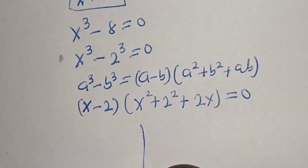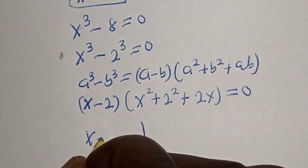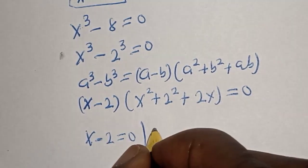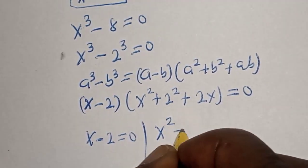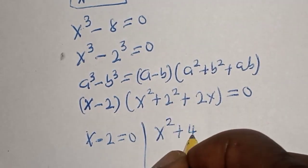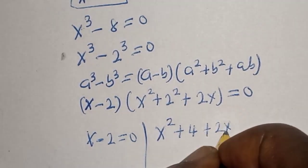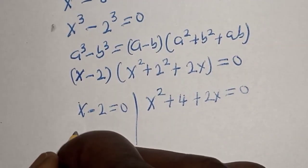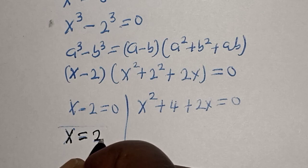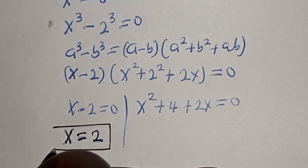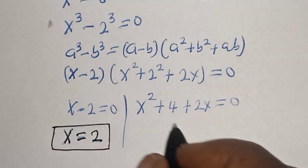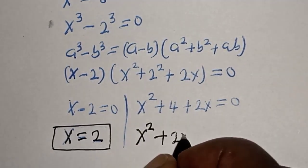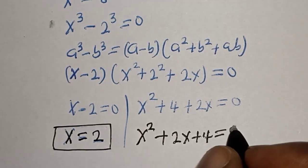Now there are two cases here. Case one: s minus 2 is equal to 0. Case two: s squared plus 2 squared, which is 4, plus 2s is equal to 0. From case one, s is equal to 2 — that is one of the values. From case two: s squared plus 2s plus 4 is equal to 0.